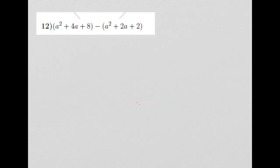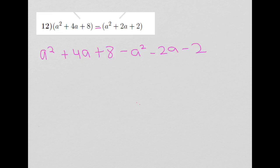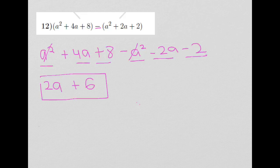Our final example asks us to subtract a squared plus 4a plus 8 minus a squared plus 2a plus 2. So first, let's distribute the negative sign. We will get a squared plus 4a plus 8 minus a squared minus 2a minus 2. Now let's combine the like terms. a squared minus a squared will cancel out. 4a minus 2a will give me 2a. 8 minus 2 will give me 6. So our final answer will be 2a plus 6.